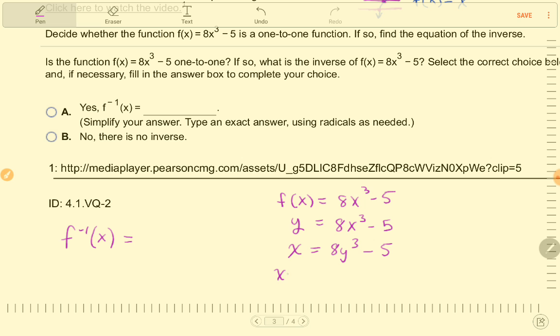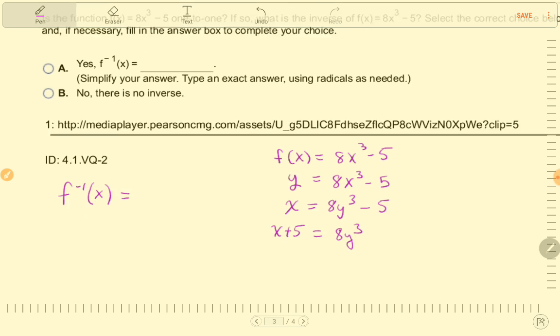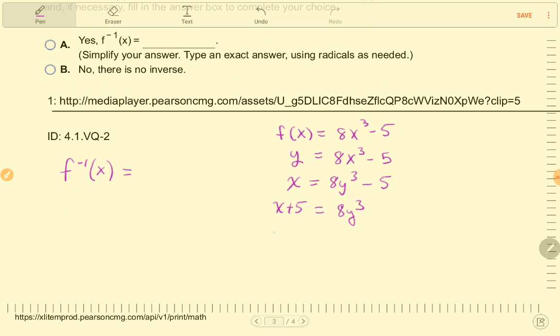So, x plus 5 equals 8y cubed, and then dividing by 8 on both sides, x plus 5 divided by 8 equals y cubed.